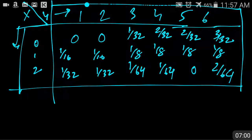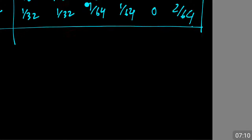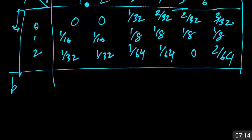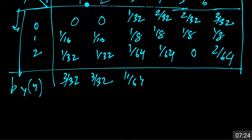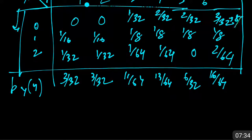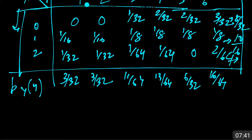This is the basic structure. We need to add two extra columns for the sum of probabilities. Adding across each row gives P(Y=y): 3/32, 3/32, 11/64, 13/64, 6/32, and 16/64. Adding across columns gives P(X=x): 8/32, 10/16, and 8/64. Always remember the sum of all values must equal 1.